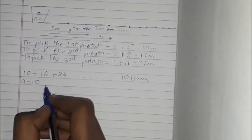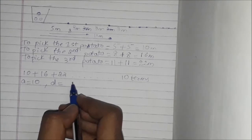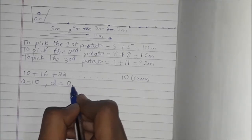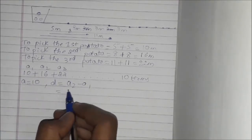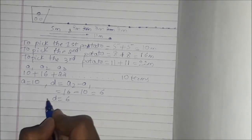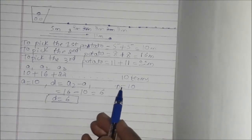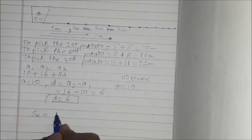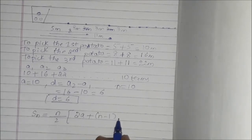Here A is equal to 10. D is given by A2 minus A1, which is 16 minus 10, equal to 6. So D is equal to 6. N is equal to 10 because there are 10 potatoes. We use the formula: S_N = N/2 × (2A + (N−1) × D).